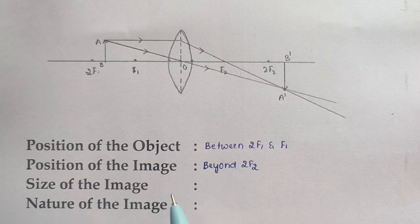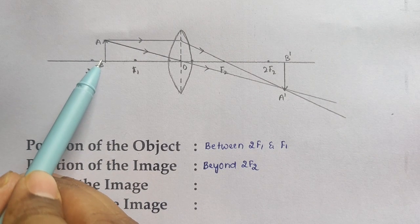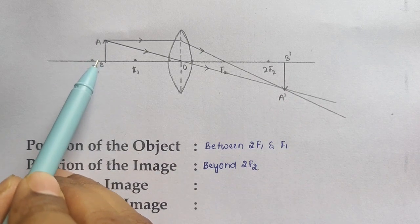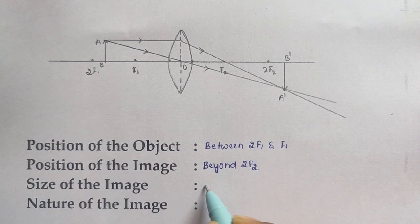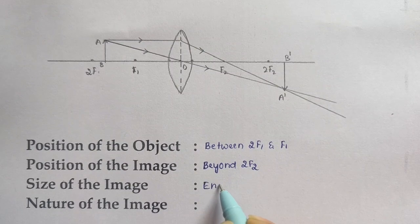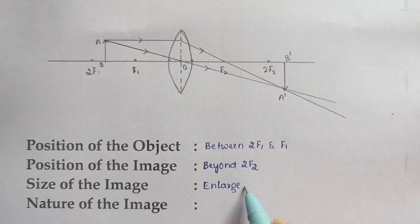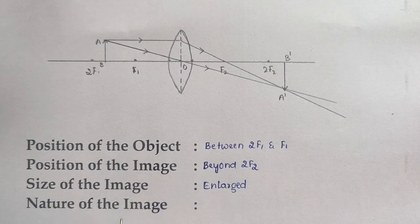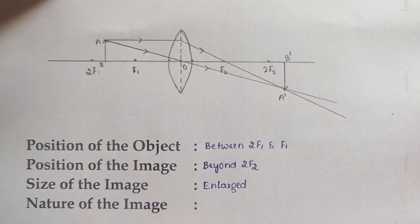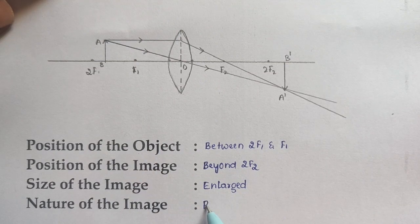What is the size of the image? The image size is larger than the object — it is enlarged. Now, what is the nature of the image? The image is formed on the opposite side of the object. Since the actual rays meet at that point, the image is real.